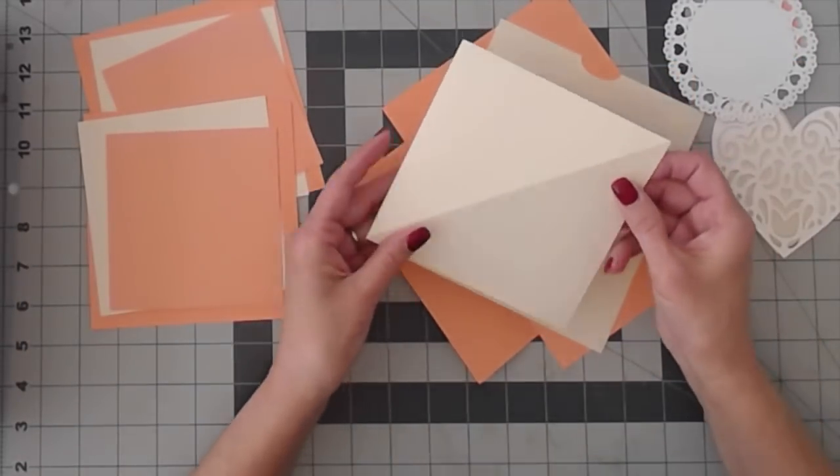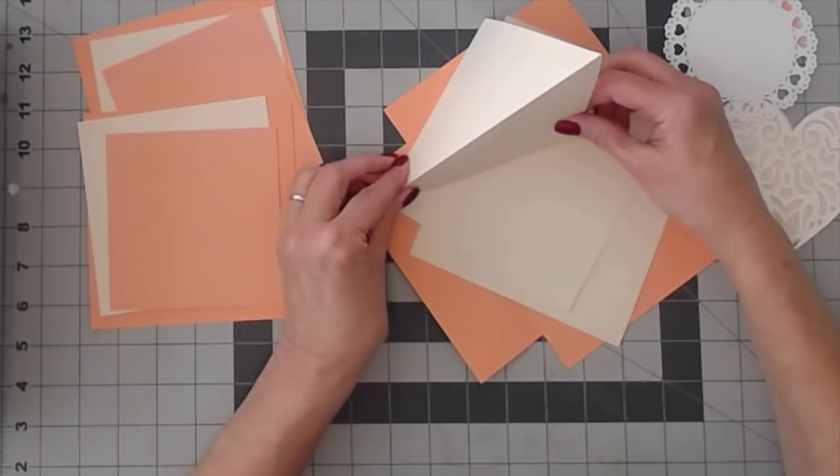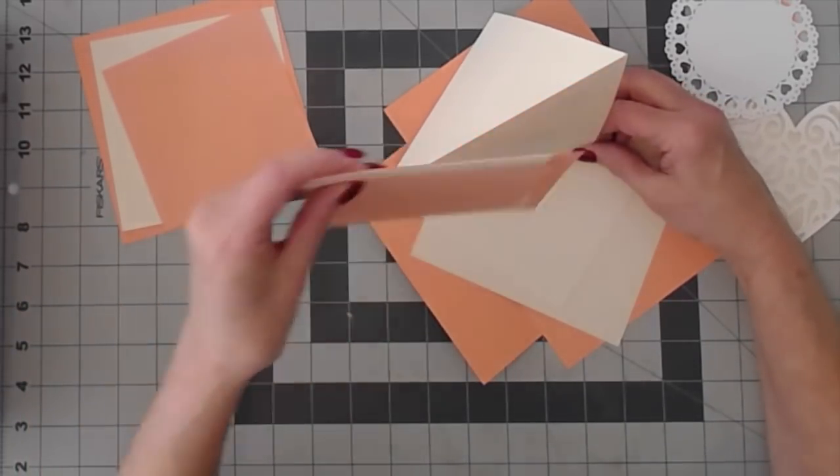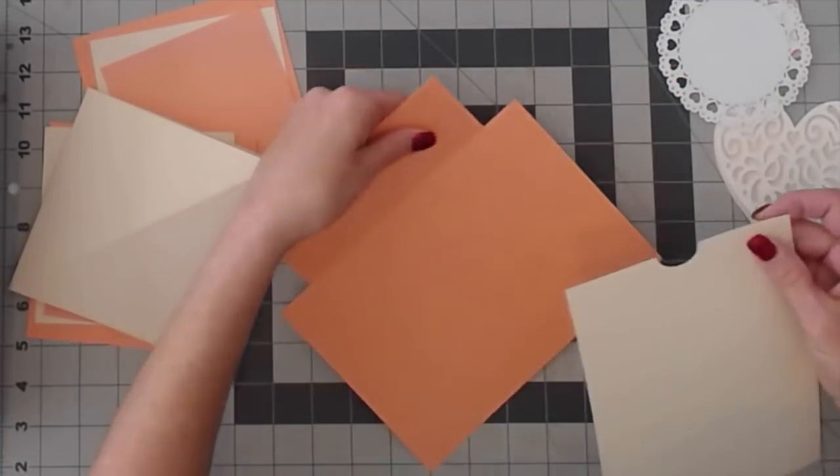You have the card itself which is scored in half and scored on an angle. That's how you get the effect of a twisted easel. And you have your envelope cutouts.